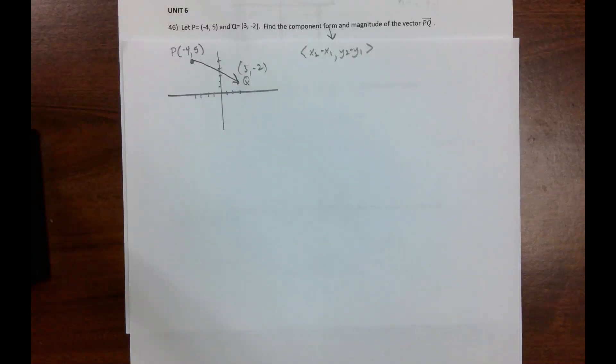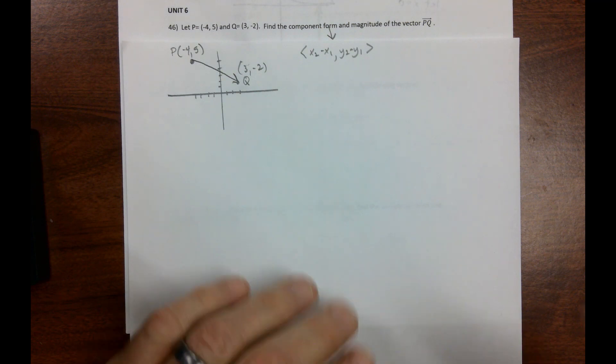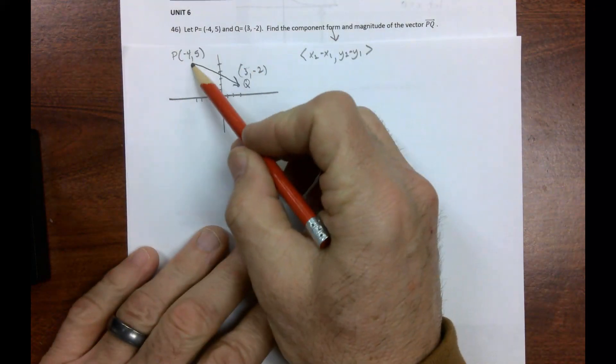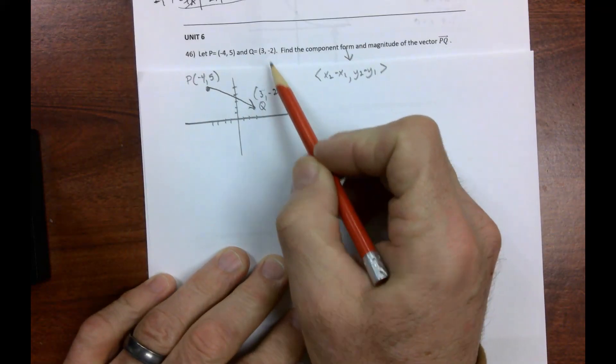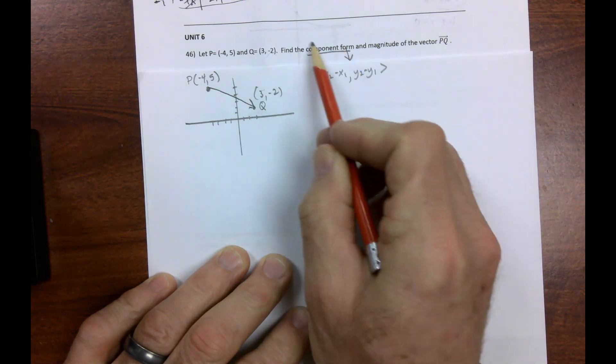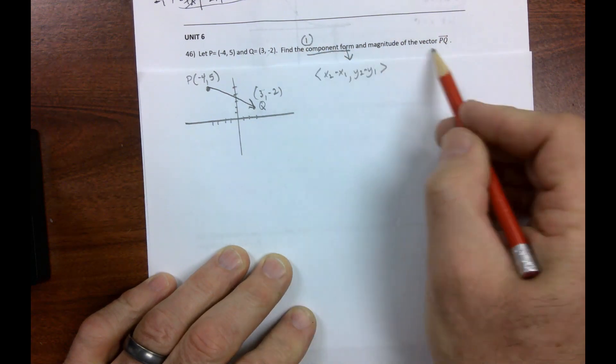Unit 6. Let's go. This should move along a little quicker than a lot of the previous problems, so let's get started. I've already gotten this one started. Let P be negative 4, 5, Q be 3, negative 2. Find the component form. We'll do that first of vector PQ.